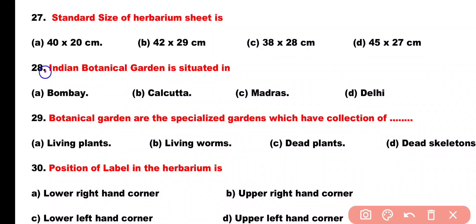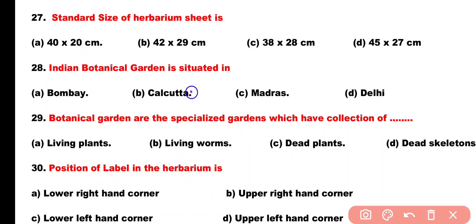Question number 28. Indian botanical garden is situated in: Option A: Mumbai, Option B: Kolkata, Option C: Madras, Option D: Delhi. Correct answer is Option B. The Indian botanical garden is situated in Howrah, located near Kolkata.